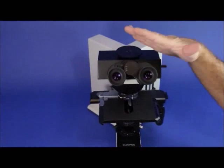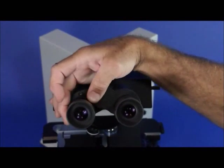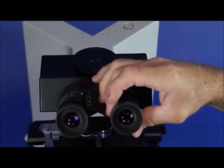First of all, starting at the very top, we have a diopter that's adjustable on the trinocular head on the left side. The right side is fixed.